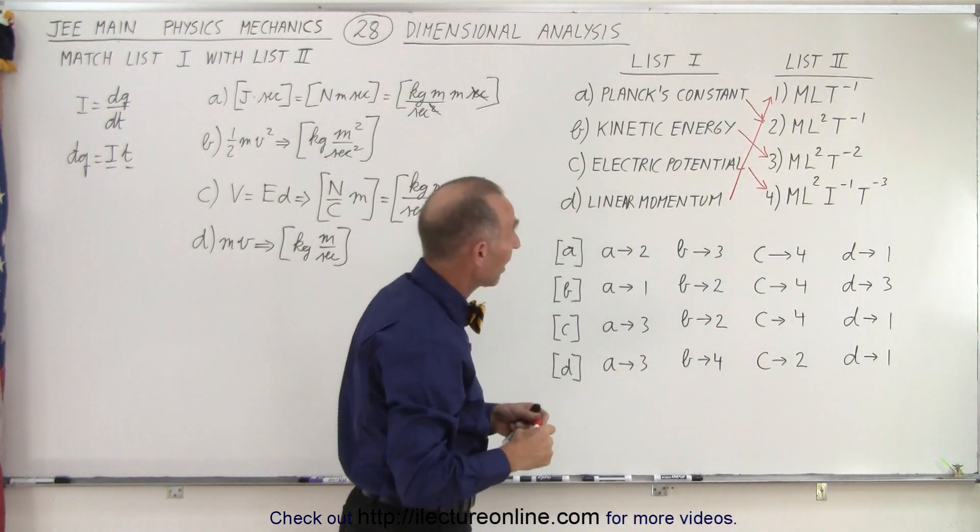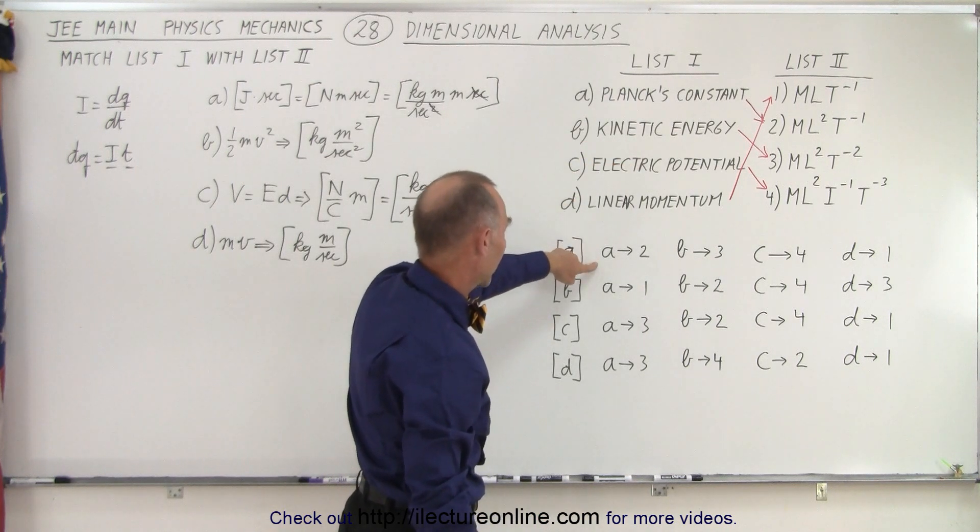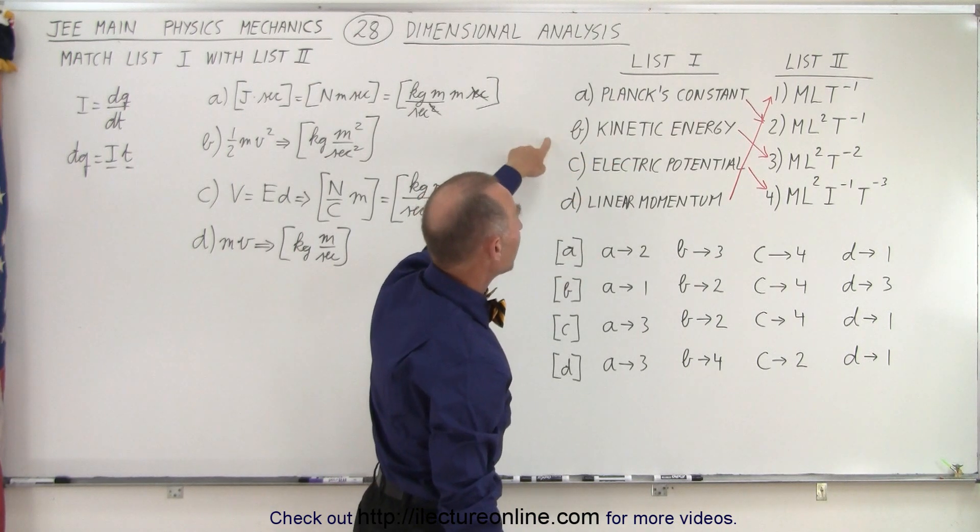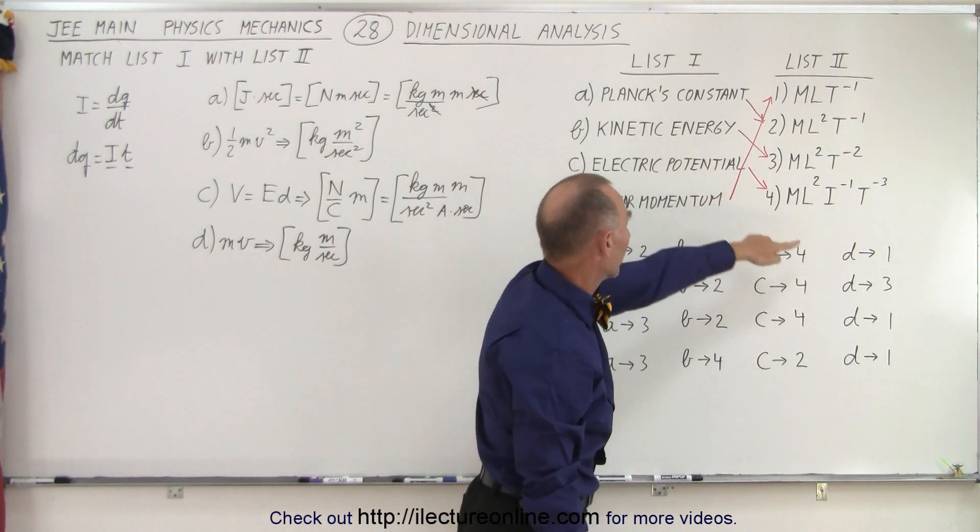And then you can start matching things up. So for A we need two, that's right here. For B we need three, which is right here. For C we need four, and for D we need one.